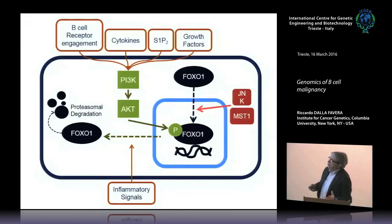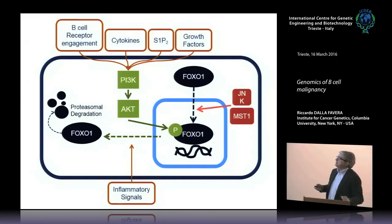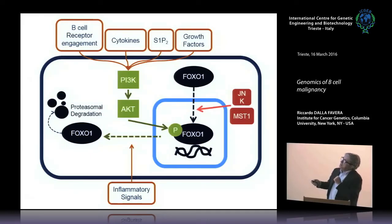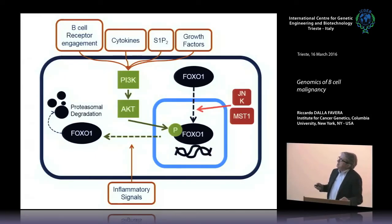What does this gene do? FOXO1, very simplified, is a DNA-binding transcription factor studied in thousands of papers in different tissues. The key point I stress here is its inverse relationship with PI3 kinase, another fundamental pathway. FOXO1 stays in the nucleus until PI3 kinase and AKT are activated, at which point it is phosphorylated, inactivated, translocated to the cytoplasm, and often degraded. PI3 kinase in germinal center B cells is downstream from many signals fundamental for their biology. So there is an inverse relationship between PI3 kinase signaling and AKT-mediated phosphorylation on one side, and FOXO1 activity on the other.